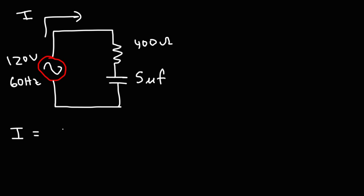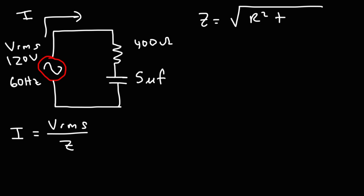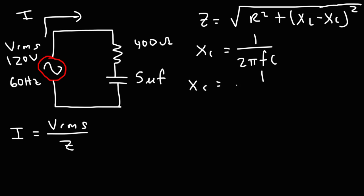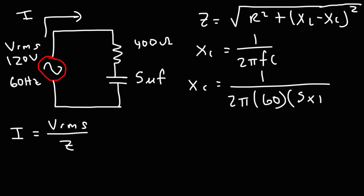To calculate the current, we need to take the RMS voltage and divide it by the impedance of the circuit. The RMS voltage is 120 volts, so we need to calculate the impedance. There are no inductors in the circuit, so XL is 0. We need to calculate XC, the capacitive reactance: it's 1 over 2π times fC. The frequency is 60 hertz and the capacitance is 5 microfarads, which is 5 times 10 to the minus 6 farads. The capacitive reactance is 530.5 ohms.